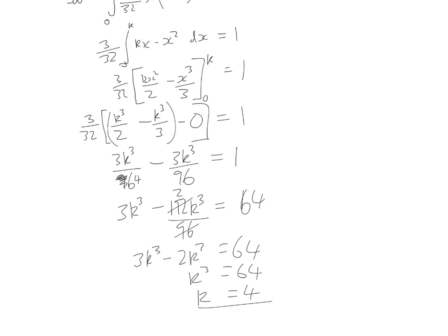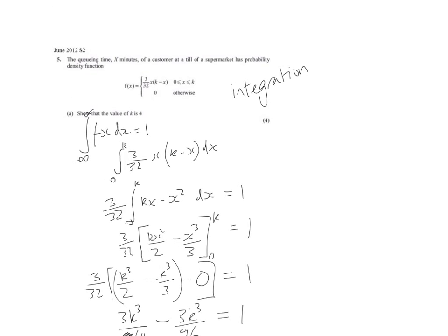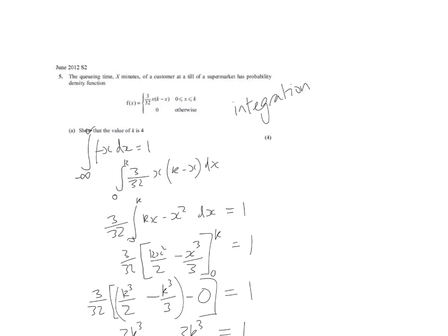So, by using the fact that the integral of the function, the integral of the entire function, the area under the entire curve, is equal to 1, has enabled us to work this out. And for this example, we've had to use integration. In the next video, we're going to look at a circumstance where we don't necessarily need to integrate in order to find the value of k. However, we'll still be using the idea that the integral of f(x) is equal to 1 between all of its limits.